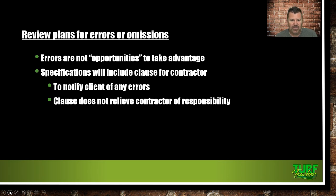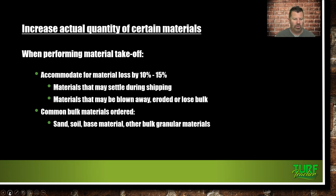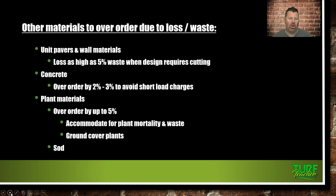Review plans for errors and omissions — errors are not opportunities to take advantage of. Specifications will include a clause requiring the contractor to notify the client of any errors. As a licensed landscape contractor, you're held accountable by the state with your bond. When performing a material takeoff, accommodate for material loss of 10-15%. Materials may settle during shipping or be blown away if loose. Common bulk materials to over-order: sand, soil, base material, granular products. For unit pavers and wall materials that can break, over-order as well. For concrete, add 2-3% to avoid a short load. For plant materials, over-order up to 5% to accommodate mortality.